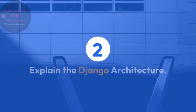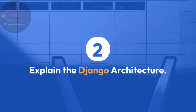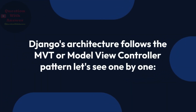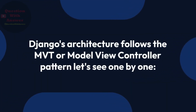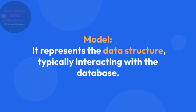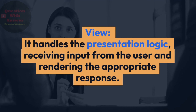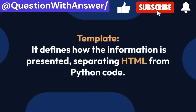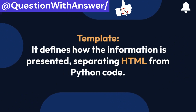Question 2: Explain the Django architecture. Answer: Django's architecture follows the MVT or Model-View-Template pattern. Model represents the data structure, typically interacting with the database. View handles the presentation logic, receiving input from the user and rendering the appropriate response. Template defines how the information is presented, separating HTML from Python code.